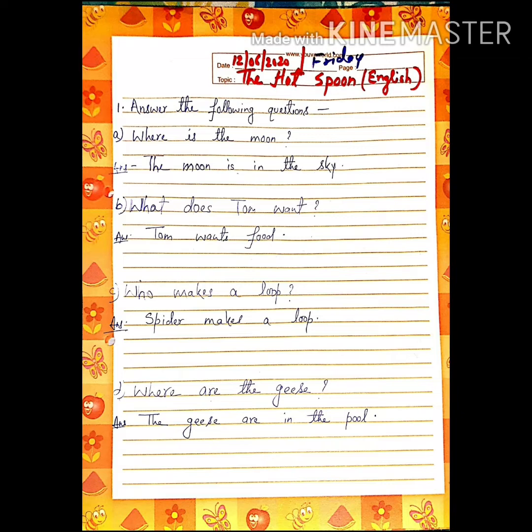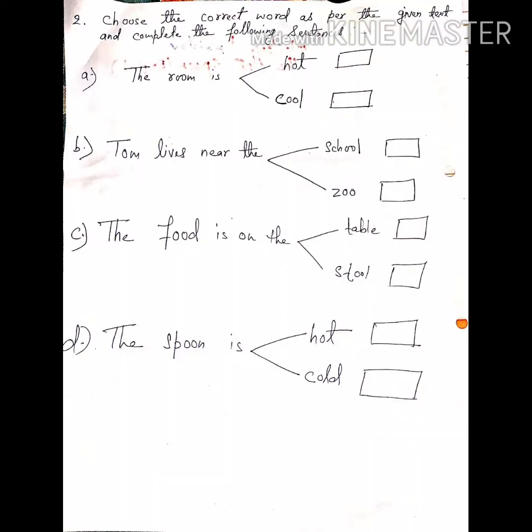Now come to question number two. And question number two is: Choose the correct word as per the given text and complete the following sentences. I am repeating: Choose the correct word as per the given text and complete the following sentences. This means there is a sentence which is incomplete, and two words are given. You have to choose one correct word and complete the sentence.